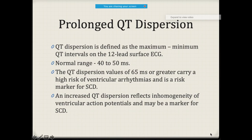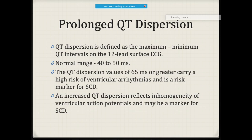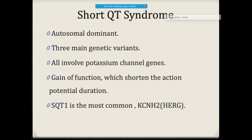Another important phenomenon is prolonged QT dispersion. QT dispersion refers to the difference between maximum and minimum QT intervals. If it is more than 65 milliseconds, there is a high risk for ventricular arrhythmias and it is a risk marker for sudden cardiac death. A value of 40–50 milliseconds is normal. Increased QT dispersion reflects inhomogeneity of the ventricular action potential.